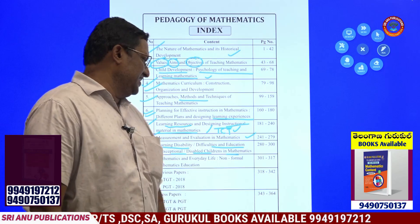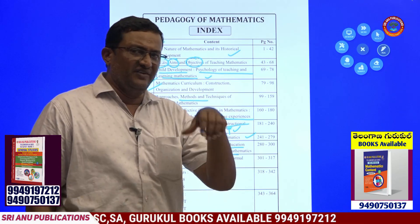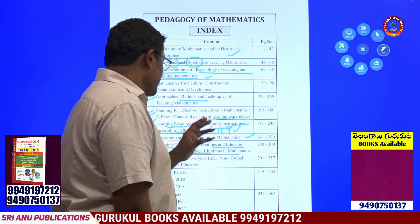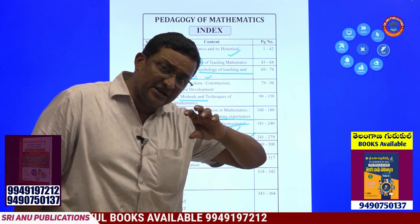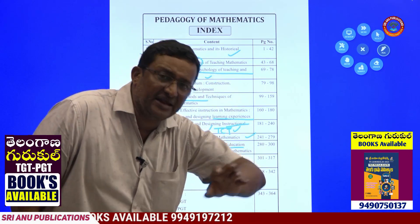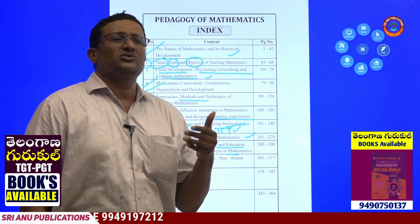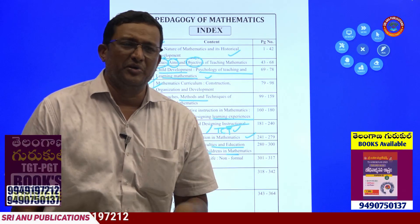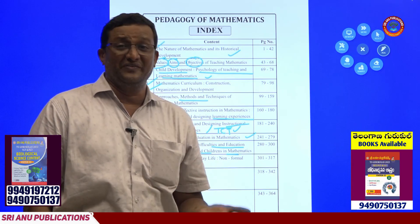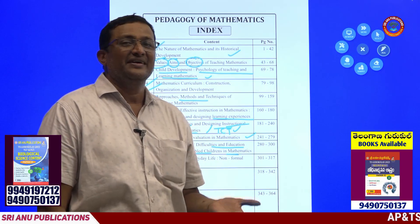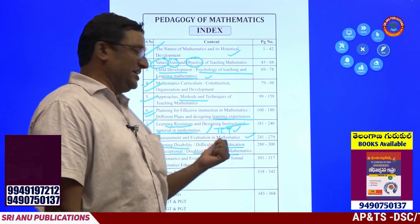The 9th chapter covers learning disabilities, difficulties, and exceptional children. In mathematics, many people have become exceptional.